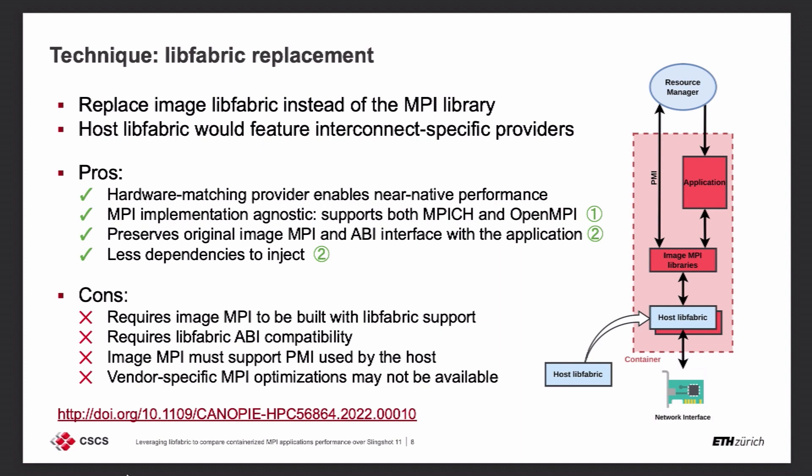By doing so, we have a hardware-matching libfabric provider within the container that provides near-native performance because we're actually accessing the network interface properly. It is MPI implementation agnostic — it supports both MPICH and OpenMPI. It preserves the original image MPI and ABI interfaces, because we're not touching the MPI anymore. It also significantly reduces the number of dependencies to inject compared to complete MPI replacement. This technique satisfies both ideal traits we want for performance portability of containers.